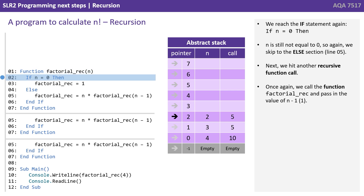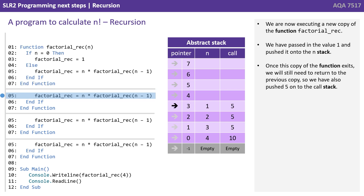We reach the if statement again: if n equals 0 — still not the case — so we jump to line 5. We hit yet another recursive function call; we call factorial_rec and pass in the value of n minus 1. n is currently 2, so 2 minus 1 is 1. We're now executing another new copy of factorial_rec. We've passed in the value 1 and pushed it onto the stack. Once this copy exits, we'll still need to return to the previous copy, so we've pushed 5 on again to know which line to return to.